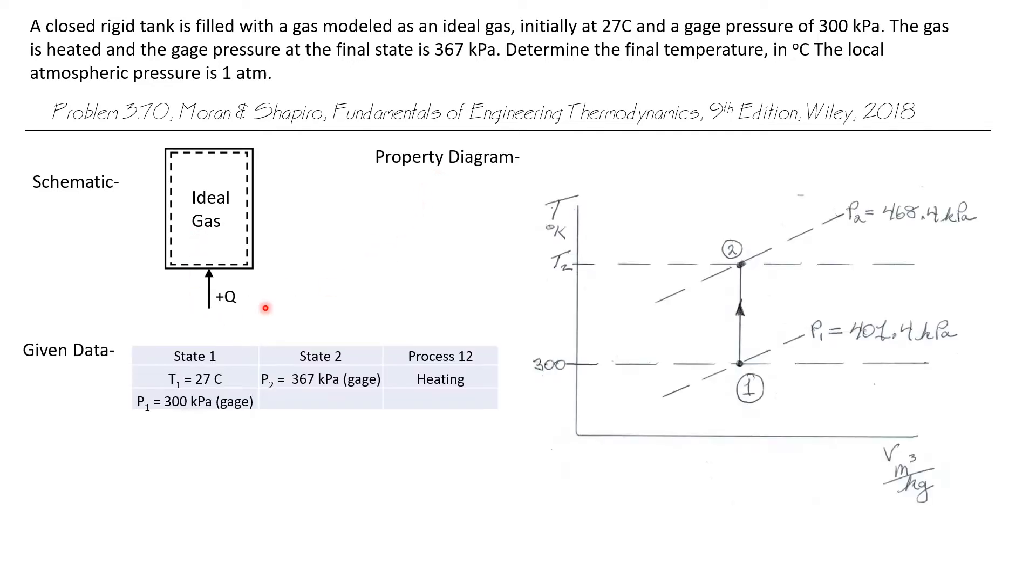Let's look at what we're given. State 1 has a temperature of 27 degrees C and a gauge pressure of 300 kilopascals. State 2 has a gauge pressure of 367 kilopascals, and this is a heating process.